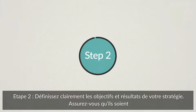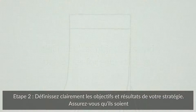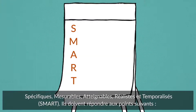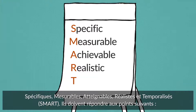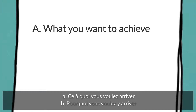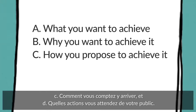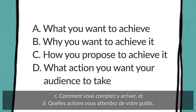Step 2. Set out clear objectives and outcomes for your strategy. Step 3. Ensure they are SMART — so specific, measurable, achievable, realistic and time-bound — and that they respond to: A. What you want to achieve; B. Why you want to achieve it; C. How you propose to achieve it; and D. What action you want your audience to take.